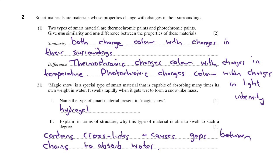Question two says smart materials are materials whose property changes with changes in their surroundings. Two types of smart material are thermochromic and photochromic paints. Give one similarity and one difference between the properties of these materials. The similarity is that they both change colour with changes in the surroundings — one mark for that. The difference is that thermochromic paints change colour with changes in temperature, and photochromic paints change colour with changes in light intensity — one mark for that.